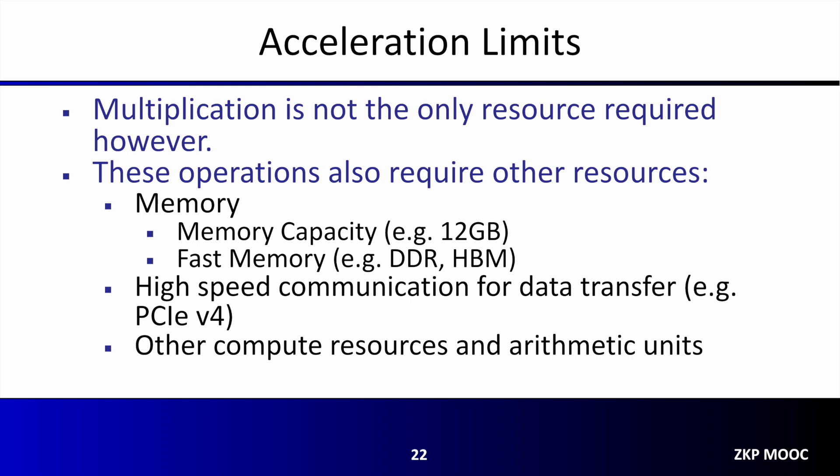Another thing to keep in mind is that multiplication is not the only resource required. While these higher-level primitives are dominated by modular multiplication, other compute resources and arithmetic units are often needed. Depending on the size and type of operations being accelerated, non-computational resources can become the bottleneck — for example, operations like NTT can sometimes be bottlenecked by the speed of memory access. For use cases with large problem sizes, sometimes all of the required data cannot fit in memory on your target platform, resulting in reduced performance. For accelerators connected to a host system, communication bandwidth can also become a bottleneck — currently, many hardware-accelerated NTT implementations, both GPU and FPGA, are limited not by their computational resources but by their ability to move data between the host and the accelerator.